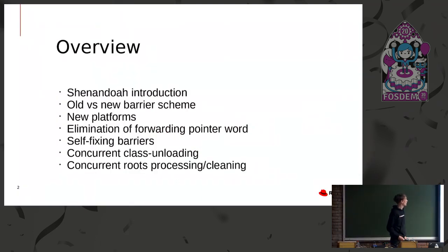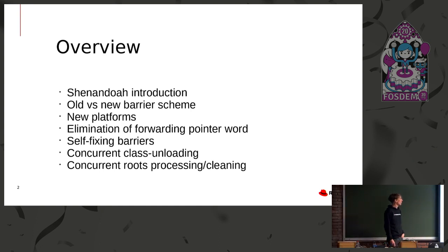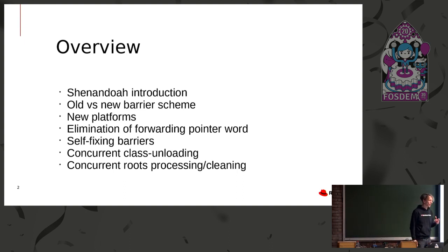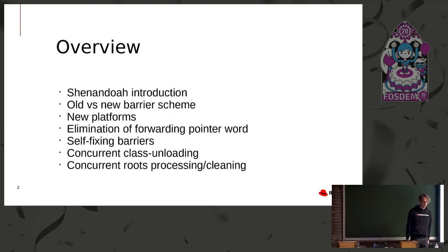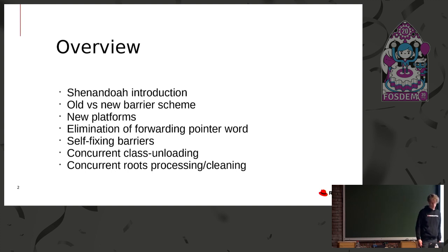I want to give you a little bit of an overview of what Shenandoah is and how it works. Then I want to go into the old versus the new barrier scheme that we are using, new platforms that we are supporting, the elimination of the forwarding pointer and how it works, and what we call the self-fixing barriers. I don't think I have time for the class unloading stuff.